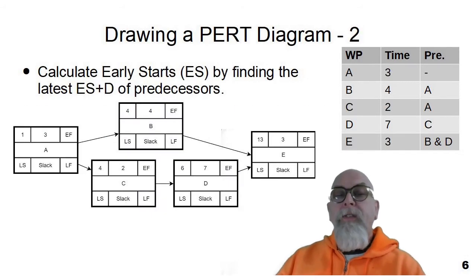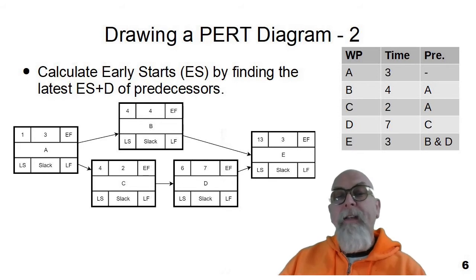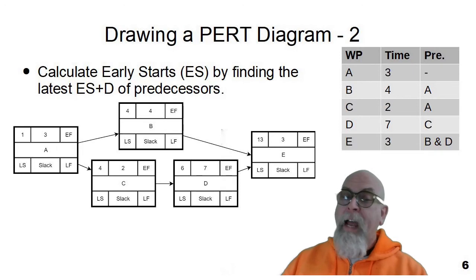You can see that I've now added early start to all of the other tasks in the network. The early start is calculated by finding the early start plus duration of the predecessors and you put the latest of those. So you can see that on box B, one plus three is four. So if we spent three days, day one, two, and three on task A, then we can start B at the earliest on day four. The same with task C, task C can be started on day four.